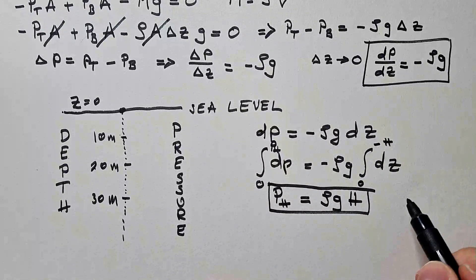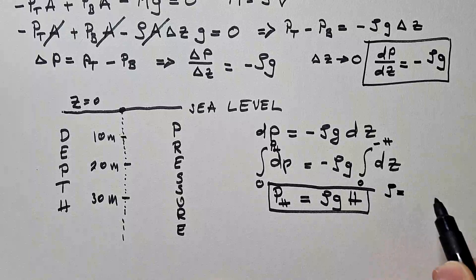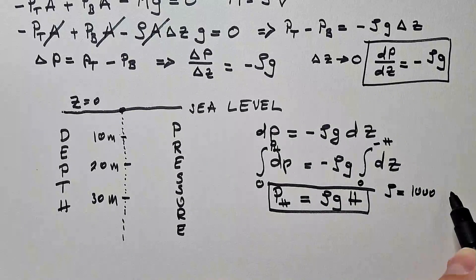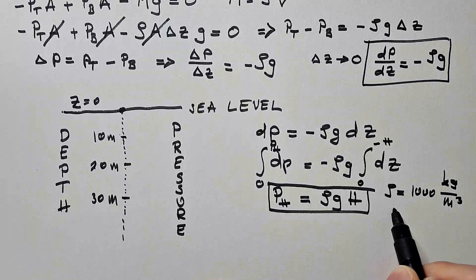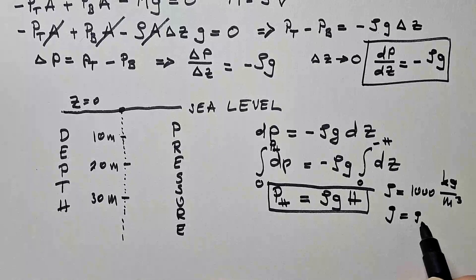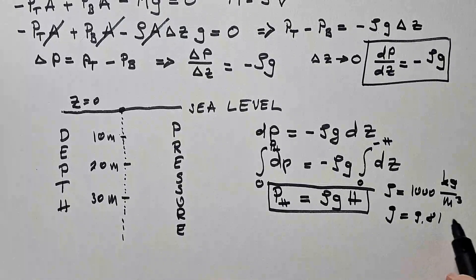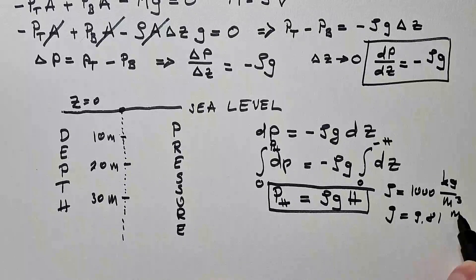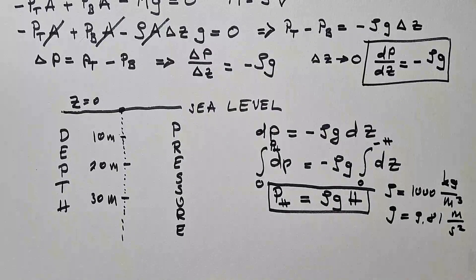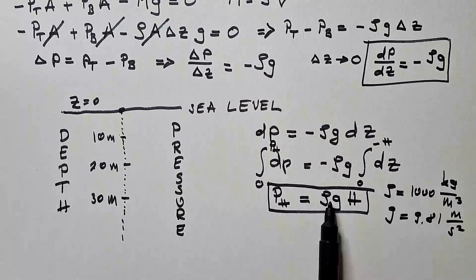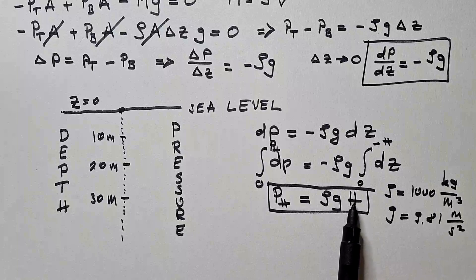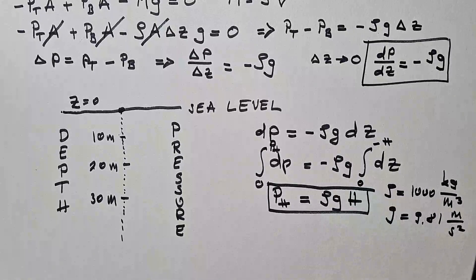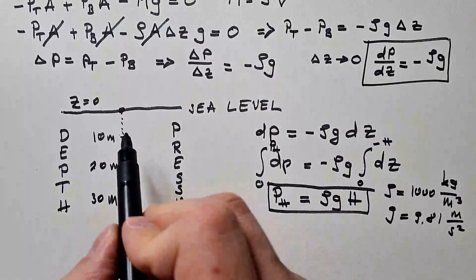We know that density of water is about 1,000 kilograms per cubic meter, and g is 9.81 meters per second squared, acceleration due to gravity.